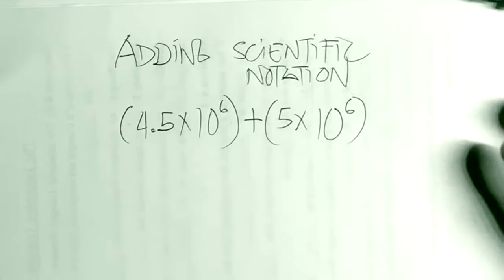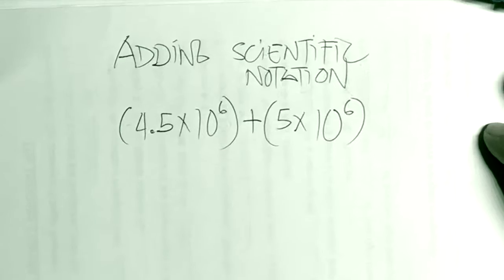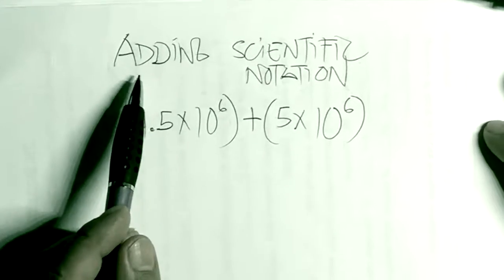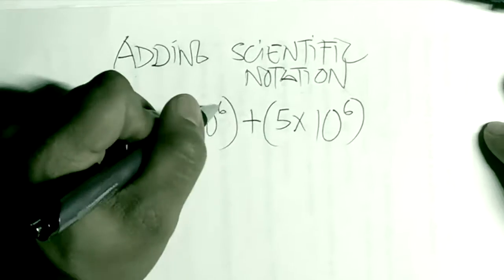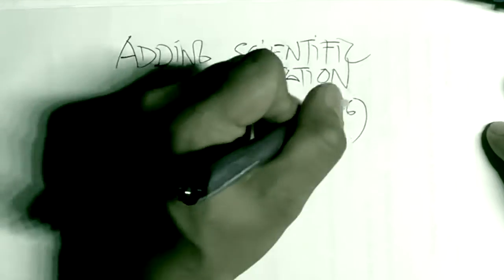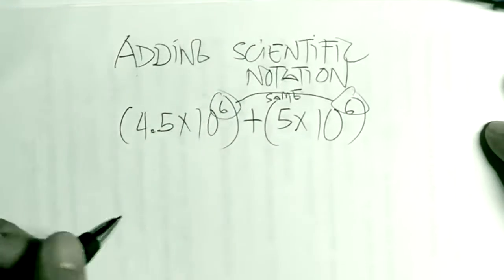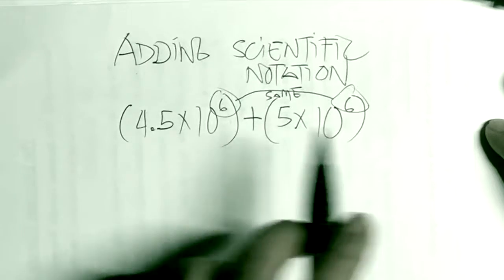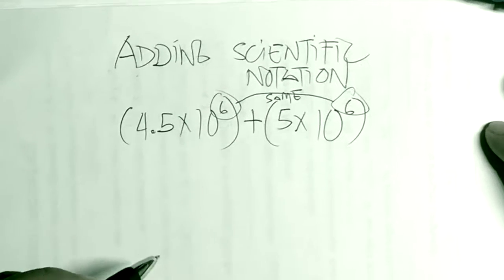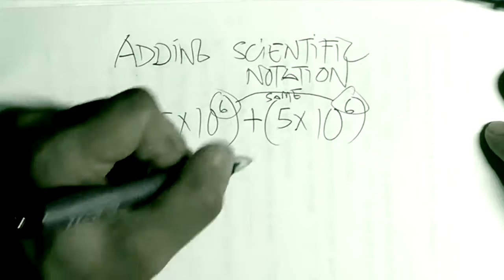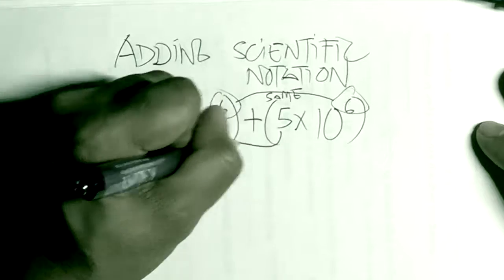When adding and subtracting in scientific notation, the rule is that the power of 10 should have the same exponent. If they have the same exponent, life is easier because all you have to do is add the coefficients.